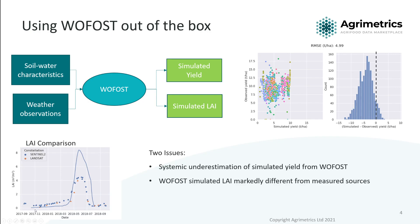Looking at the simulated leaf area index as a continuous line and comparing it with markers which are true observed leaf area indexes from Verde, we can see that there's a marked difference, particularly in the amplitude between May and July.